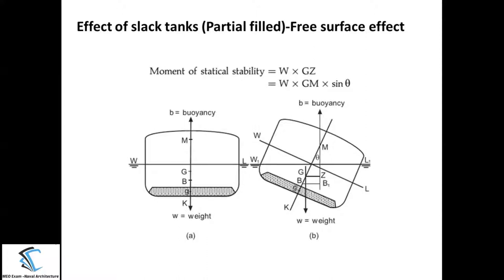Now, what is the meaning of structural effect? Consider the double bottom of the ship. In the double bottom, if it is partially filled, there will be some space available in the double bottom tank for the movement of the liquid. Because of some external agency, the ship is going to start rolling about the x-axis. When the ship starts rolling, the liquid present inside the tank will also start oscillating within the tank, and this water will go and strike on the side of the tank. Because of that, there will be a lot of blows on the side of the tank, and the structural integrity of the DB tank may get lost. This is the effect of the free surface from the structural point of view.